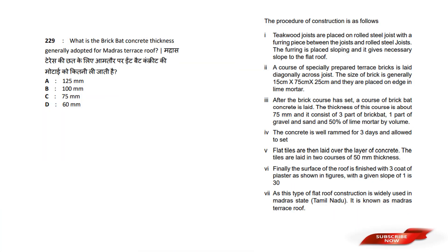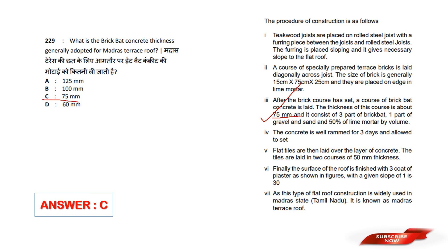What is the brick bat concrete thickness generally adopted for the Madras Terrace roof? Options are: 125 mm, 100 mm, 75 mm, 60 mm. Answer option C — 75 mm. The thickness is 75 mm. Answer option C.